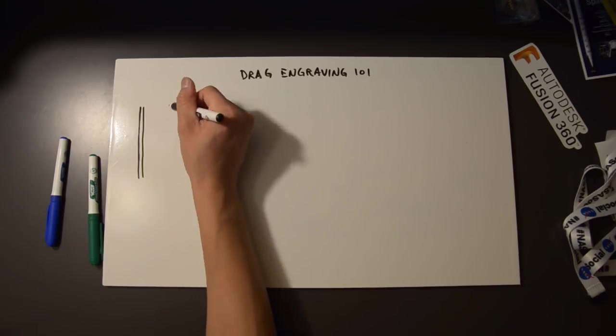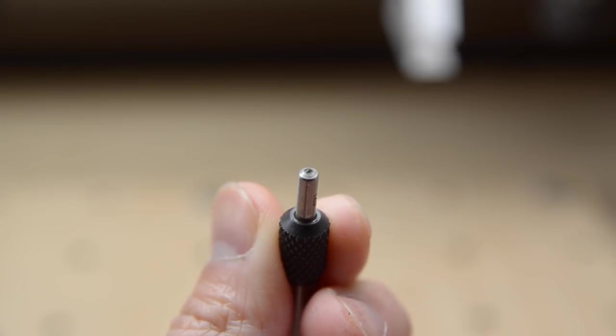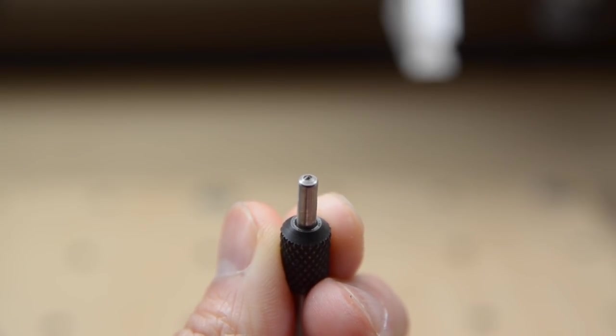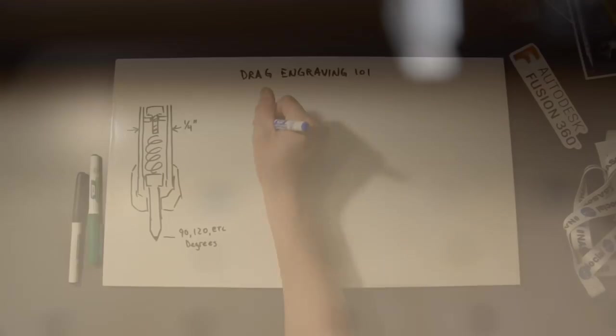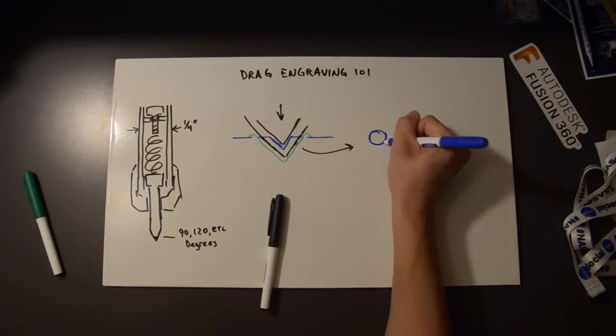A drag engraving bit is a spring-loaded device with a hardened tip that'll mark anything and everything softer than itself. And since this tool has a tiny piece of diamond at the tip, it can mark a lot of things. Now, because these tools score rather than cut, they don't actually remove material, they physically displace it.